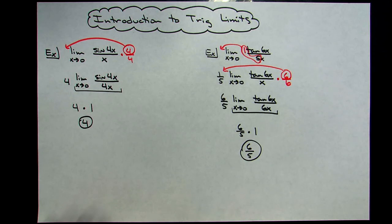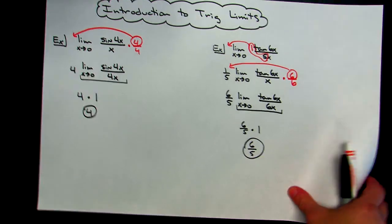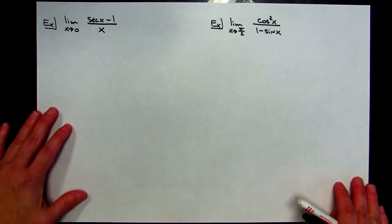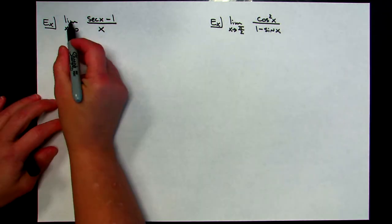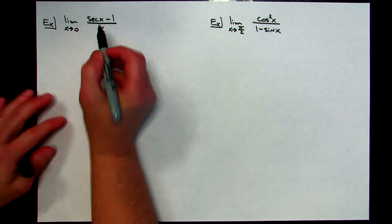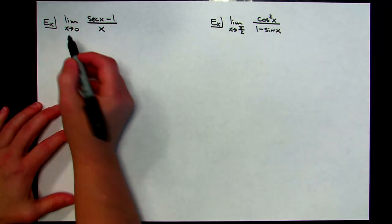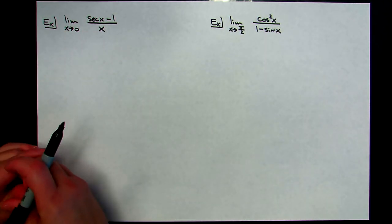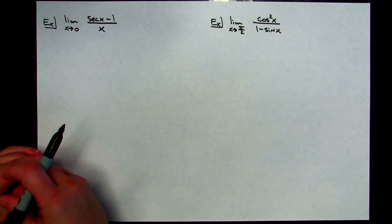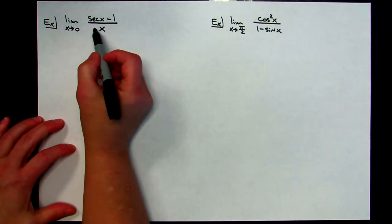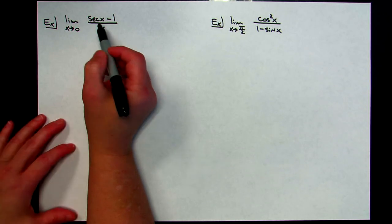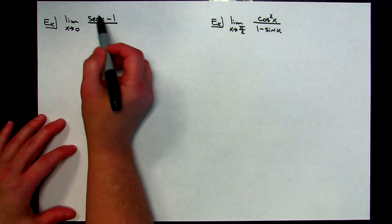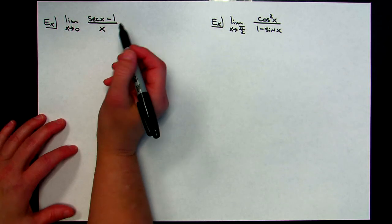Those were two straightforward examples showing special trig limits. Now let's look at some others with different skills or concepts. For this example, I've got the limit as x approaches 0 of secant x minus 1 over x. I'm still approaching 0, so maybe I can use one of the special trig limits — maybe not. I'm not seeing any sines, tangents, or cosines yet, so I'm going to try replacing secant with the reciprocal identity 1 over cosine.